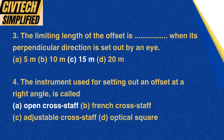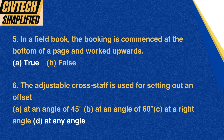Question 4: The instrument used for setting out an offset at a right angle is called: A. Open cross staff, B. French cross staff, C. Adjustable cross staff, D. Optical square. Correct option: A. Open cross staff. Question 5: In a field book, the booking is commenced at the bottom of a page and worked upwards. A. True, B. False. Correct option: A. True. Question 6: The adjustable cross staff is used for setting out an offset at: A. An angle of 45 degrees, B. An angle of 60 degrees, C. A right angle, D. Any angle. Correct option: D. At any angle.